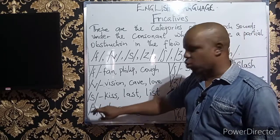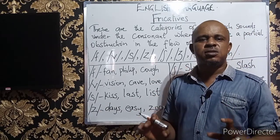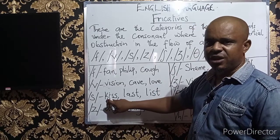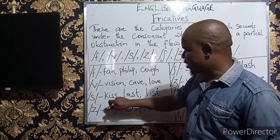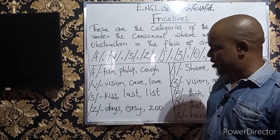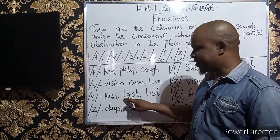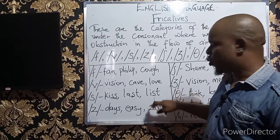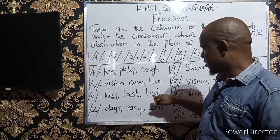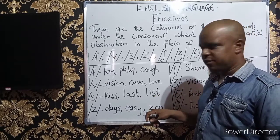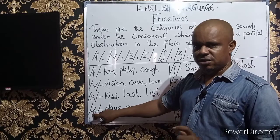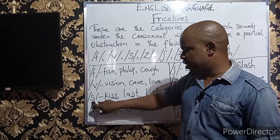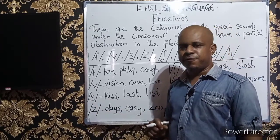The next sound is /s/, so we have words like 'keys,' 'last,' and 'list.' Then we have /z/, which is the voiced counterpart — /s/ is voiceless and /z/ is voiced.